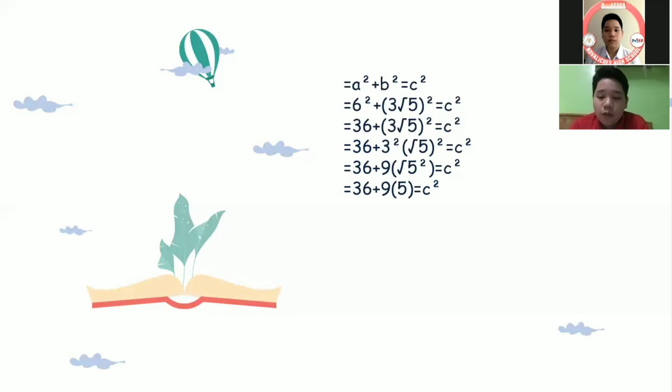To simplify this, just multiply 9 by 5 and the result is 45 which gives us the equation 36 plus 45 equals c squared.